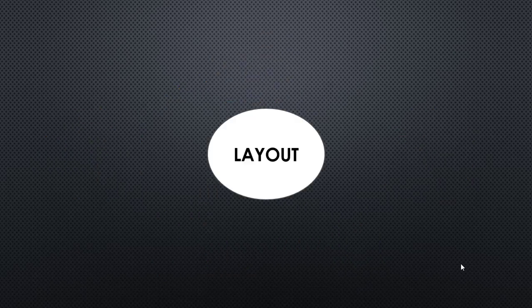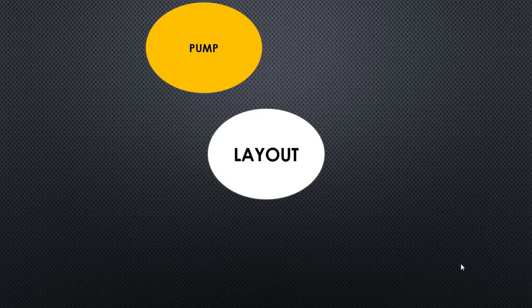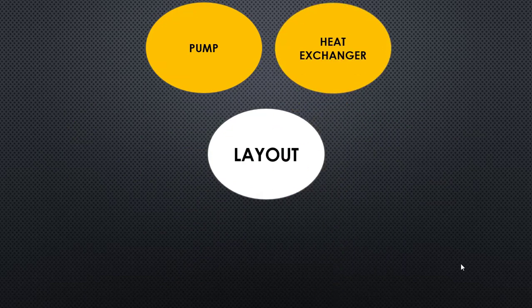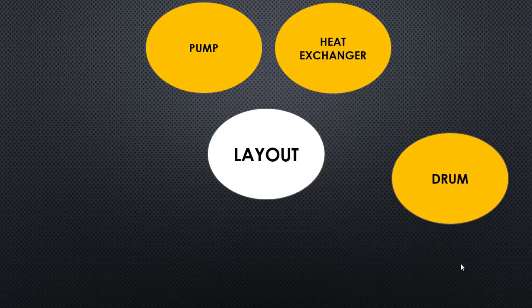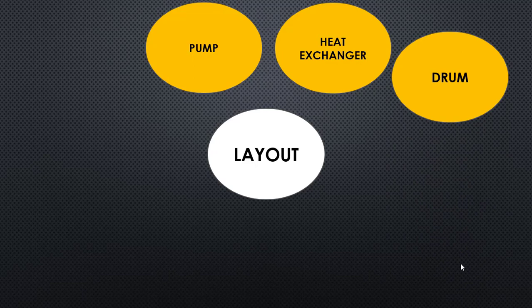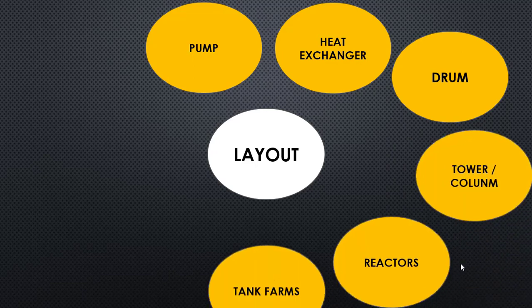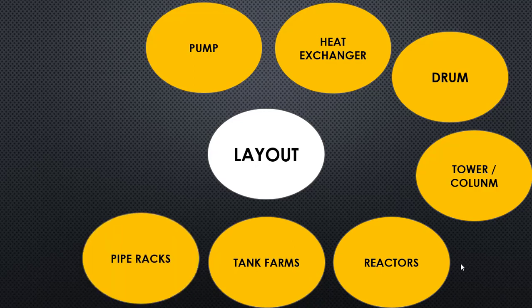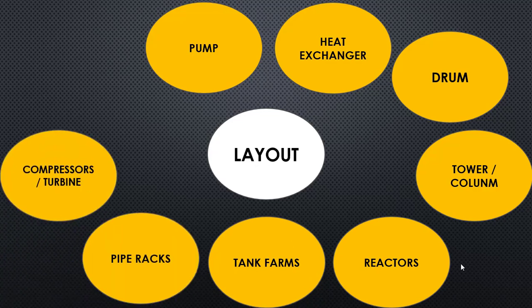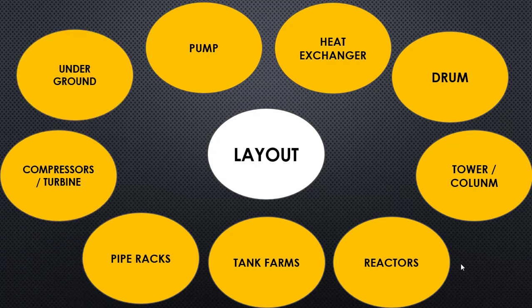Let's go a little deeper into the subtopics. When we talk about piping layout, you must know piping for pumps, heat exchangers, drums, towers and columns, reactors, tank farms, pipe racks, compressors and turbines, and underground facilities. At least you must have a good knowledge about these areas before being recognized as an expert in piping design.